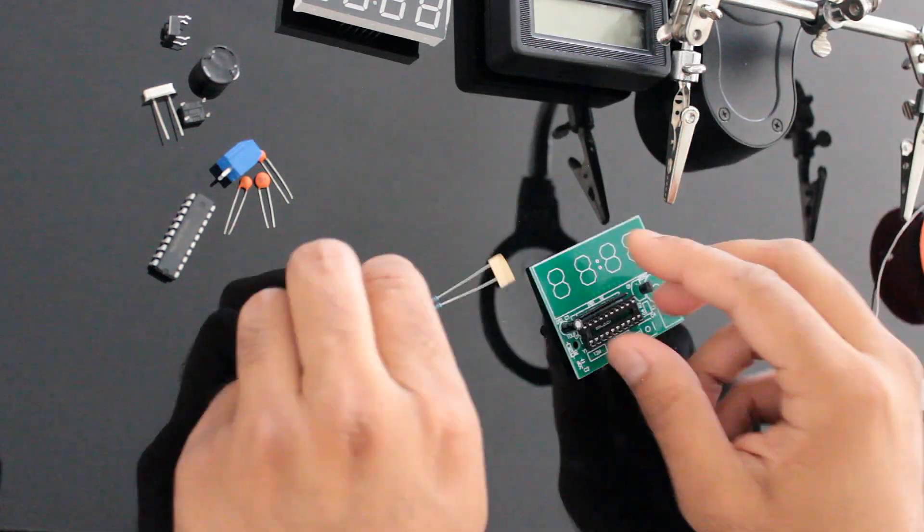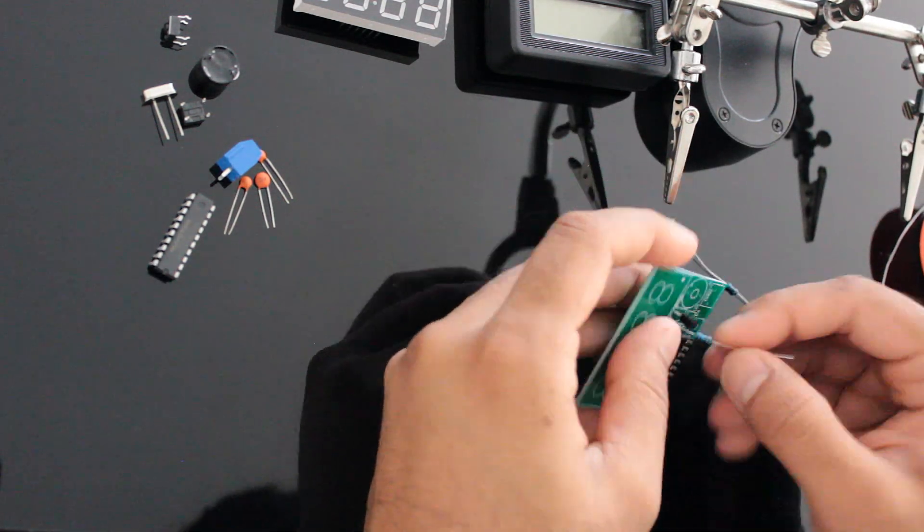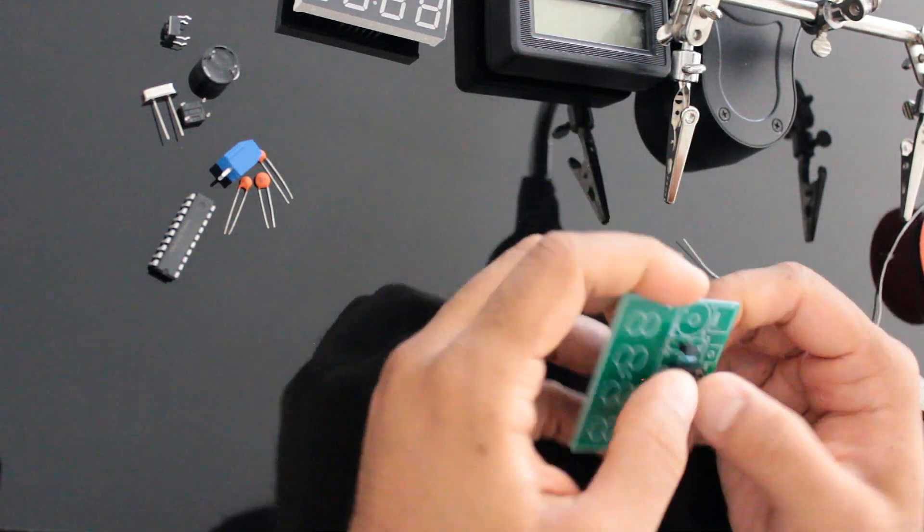After soldering the base of the IC, I'm soldering the two 10K resistors and the three ceramic capacitors to the board.